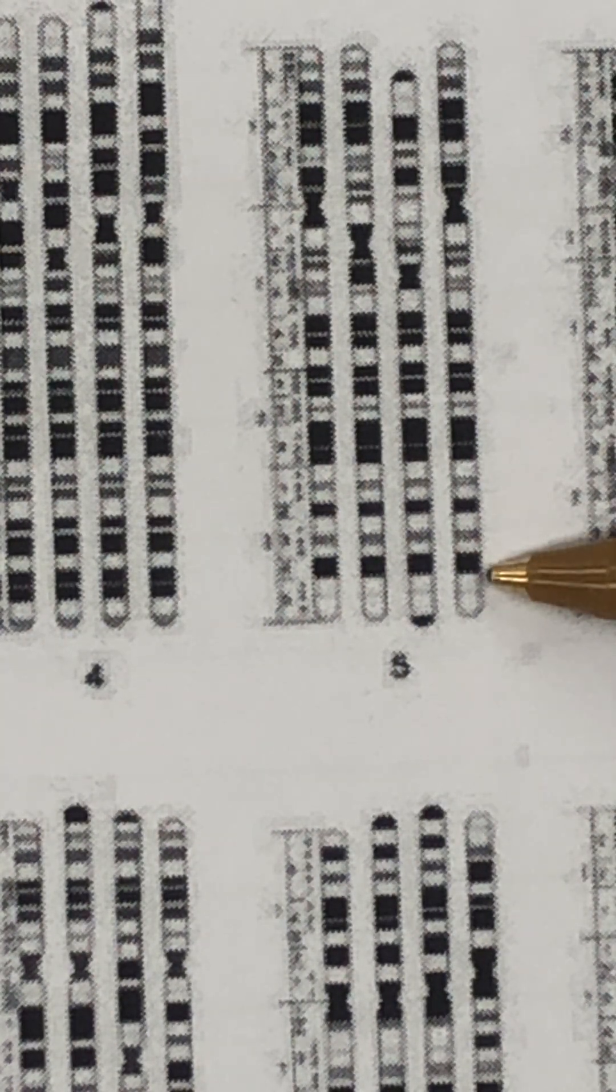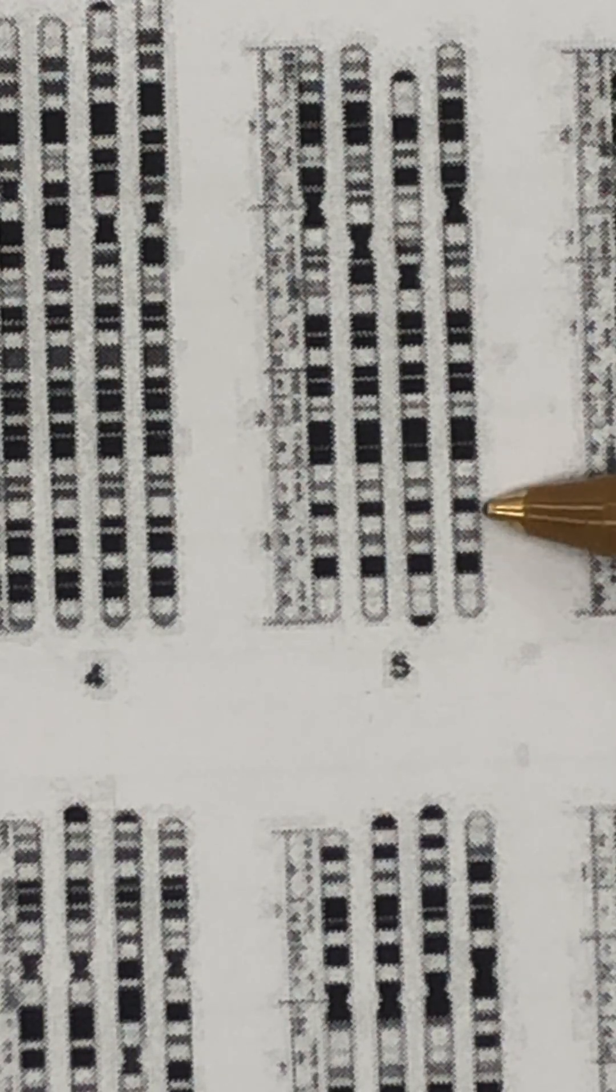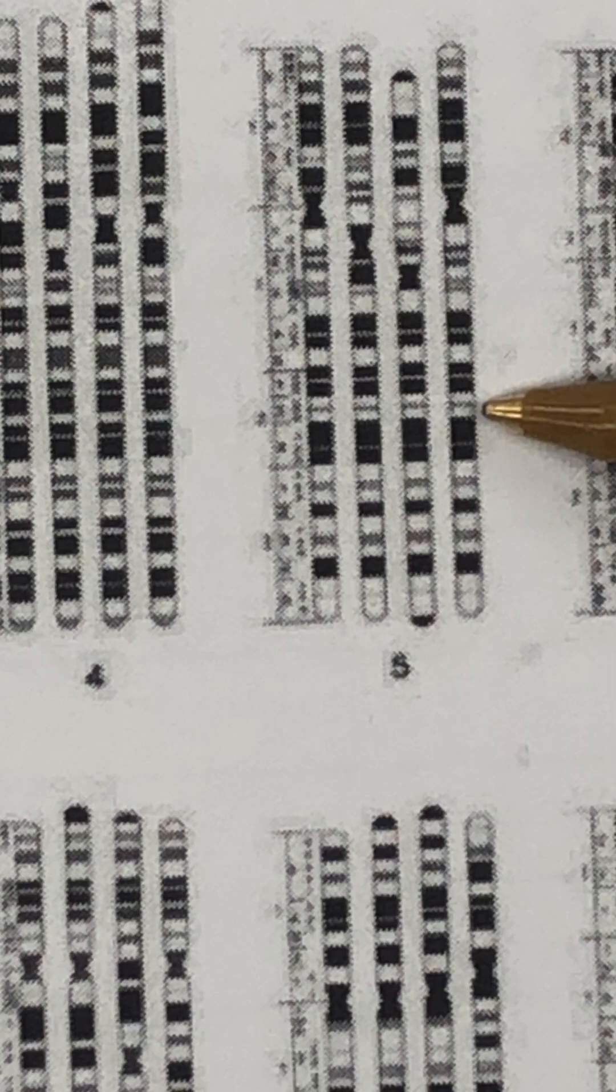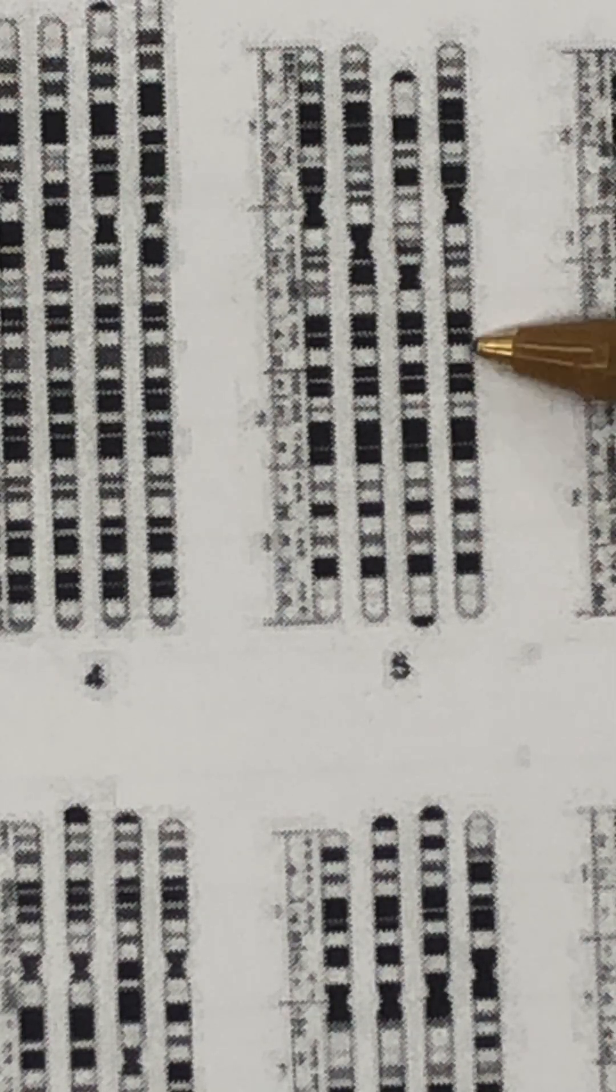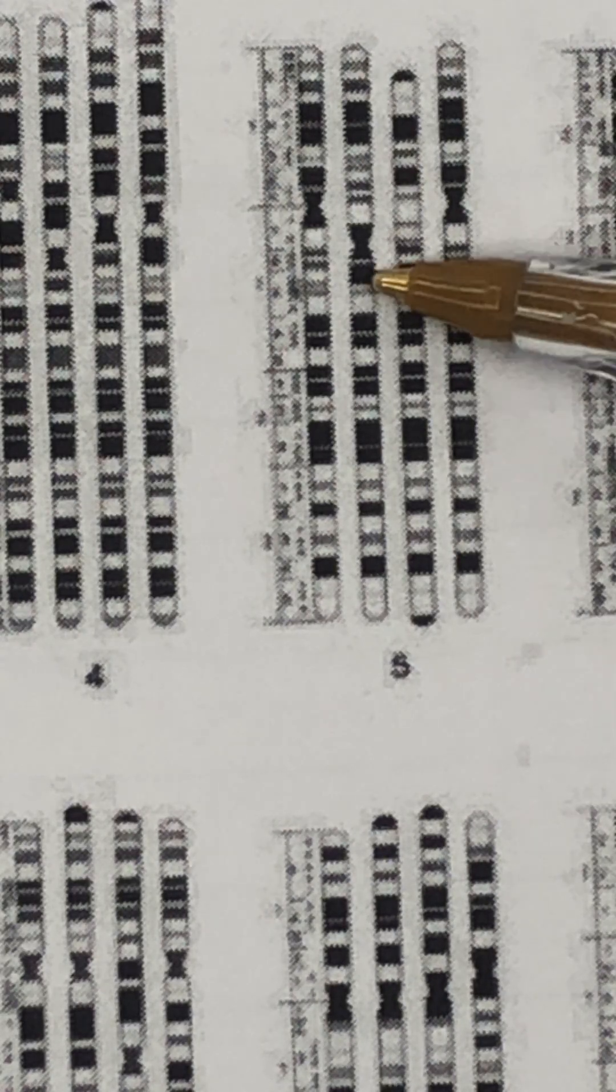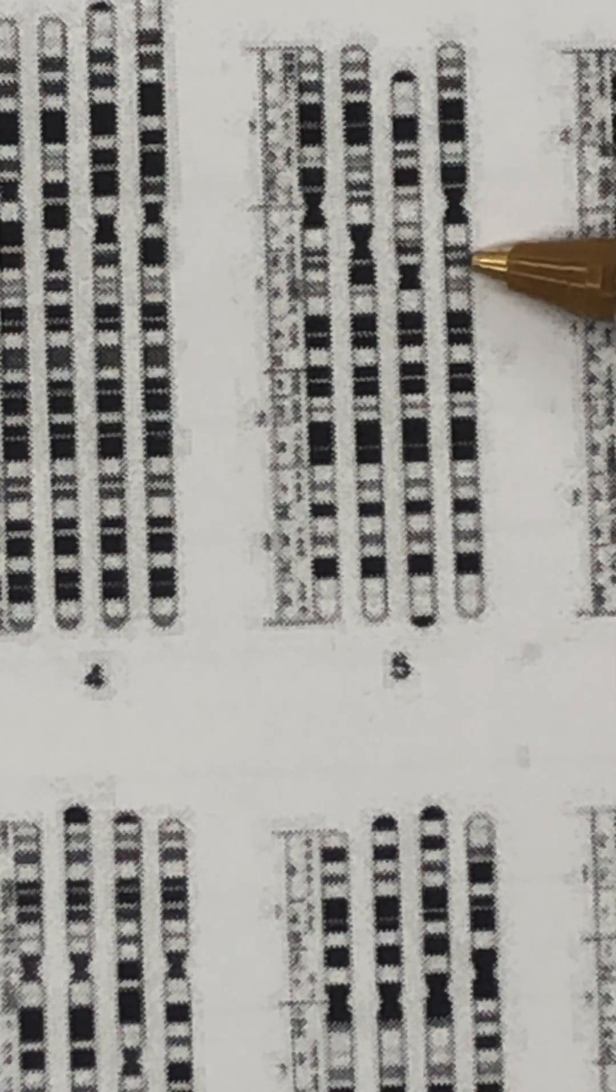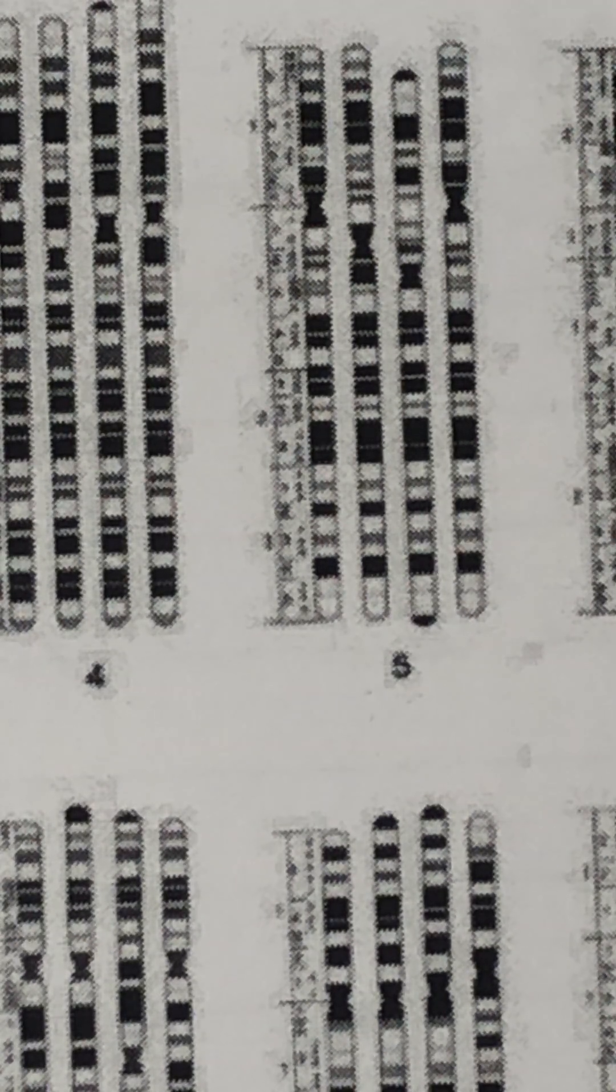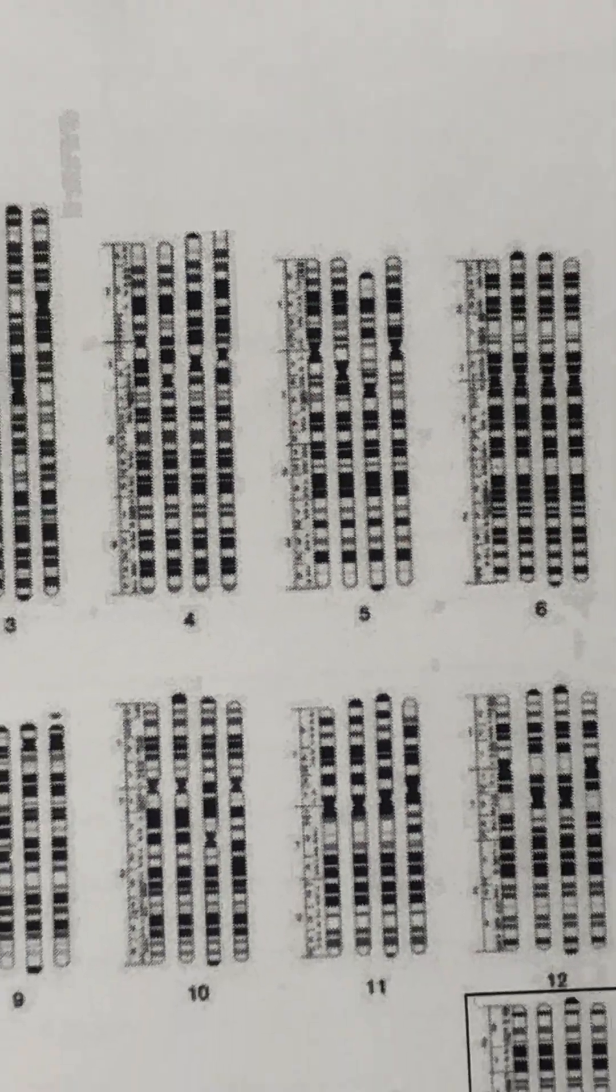But overall the chromosome banding pattern—thick band, little thick, light, double thick, really tiny, double white, double—the pattern looks really not exact. This is a little different, that's a little different, but so much of this is the same.